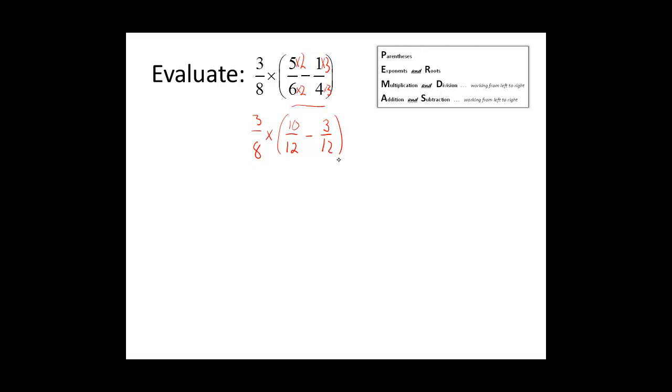We have the same denominator, so now we will subtract the numerators. 10 minus 3 is equal to 7.